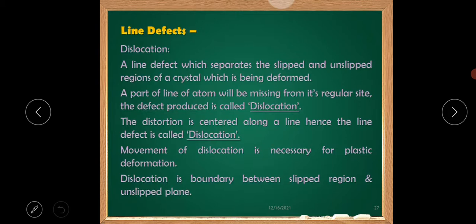Movement of dislocation is necessary for plastic deformation. Dislocation is boundary between slipped region and unslipped plane.